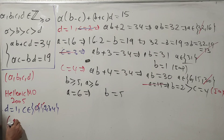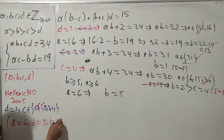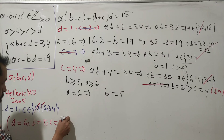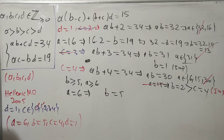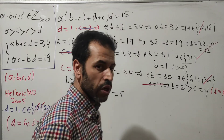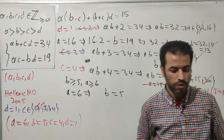Therefore the only solution is a = 6, b = 5, c = 4, and d = 1. Thank you for watching — see you in the next video!